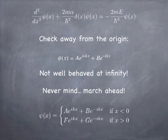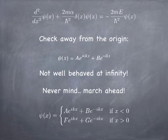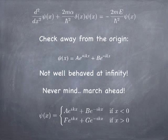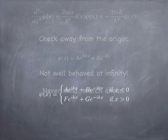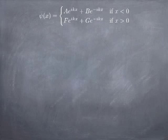The wave function has to be defined on the left and on the right side of the delta function, but we don't really know what's going to go on at the delta function yet. What we can do is write a general expression for a linear superposition of a right-traveling and left-traveling wave on the left of the potential, and a right-traveling and left-traveling wave on the right of the potential.